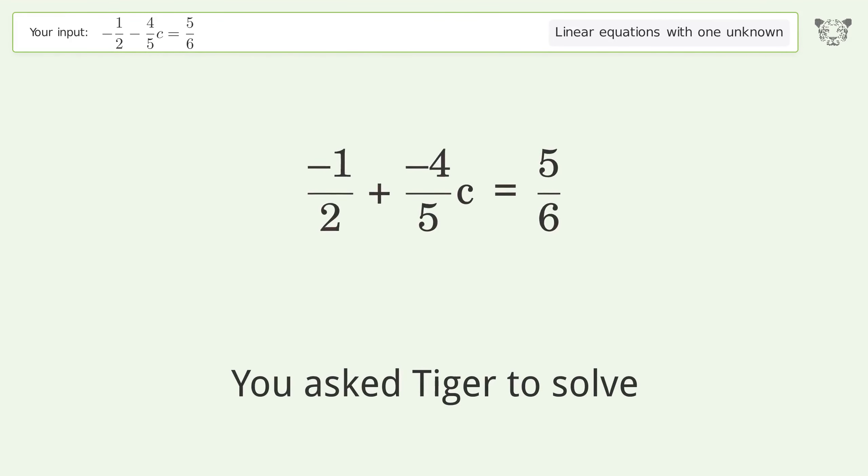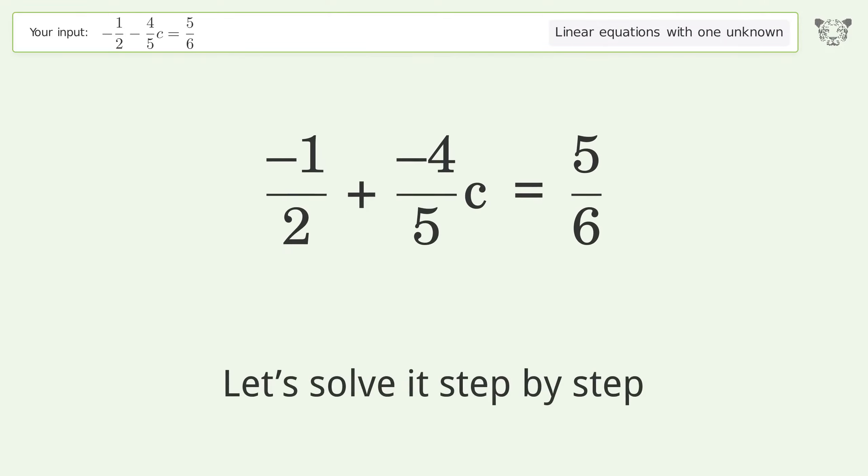You asked Tiger to solve this, which deals with linear equations with one unknown. The final result is c equals negative 5 over 3. Let's solve it step by step.